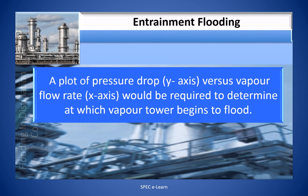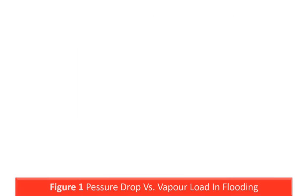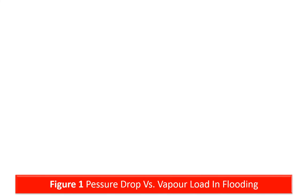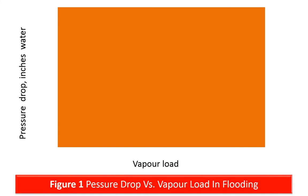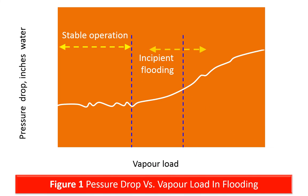A plot of pressure drop versus vapor flow rate is required to determine at which vapor flow rate the tower begins to flood. This is a typical pressure drop curve obtained when tracking the trend of increasing pressure drop against vapor load as the tower floods. There are three zones in this graph: the first zone is a stable operation zone, the second zone is an incipient flooding zone, and the third zone is a flooding zone where column flooding is taking place.